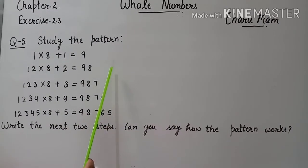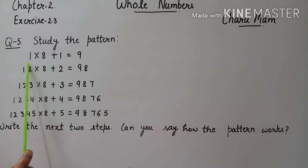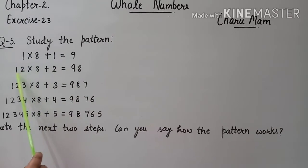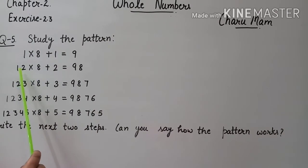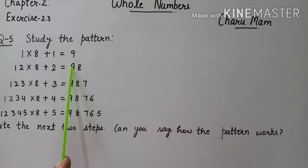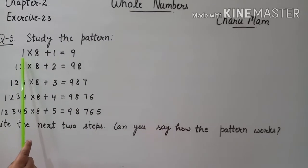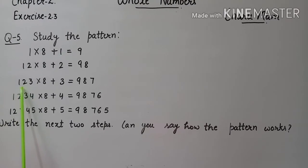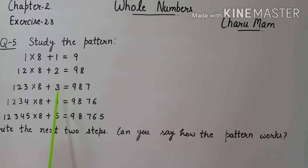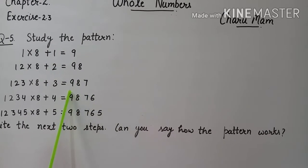तो इन्होंने कहा है कि इस pattern को study और observe करना है, और next two steps write करने हैं. First line में 1 × 8 + 1 = 9. Next step में 1 के बाद 2 आया — 8 as it is है. यहाँ पर 9 था तो next step में 9 के बाद 8, यानि एक कम नंबर write की. ऐसे ही first में 1, फिर 1,2, then 1,2,3 — next number increase हो गया. 8 as it is. और यहाँ पर पहले 9, फिर एक कम होकर 9,8, फिर 9,8,7.